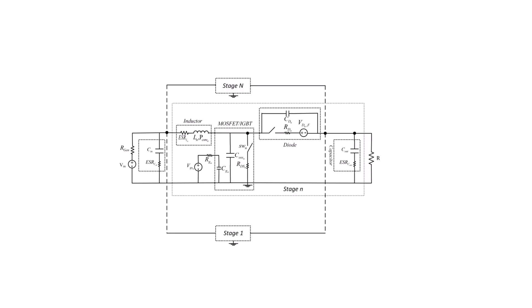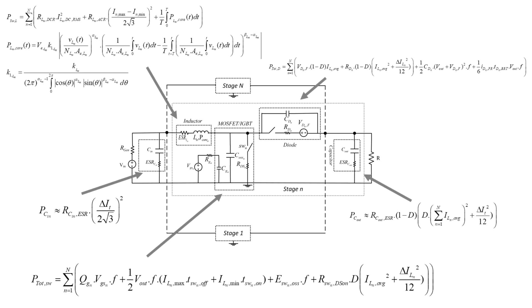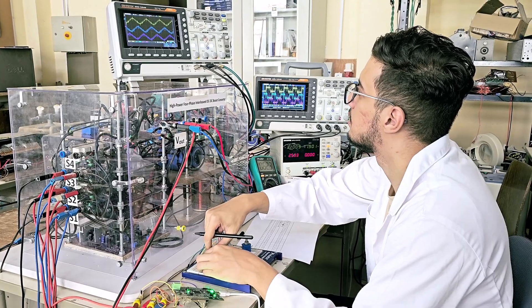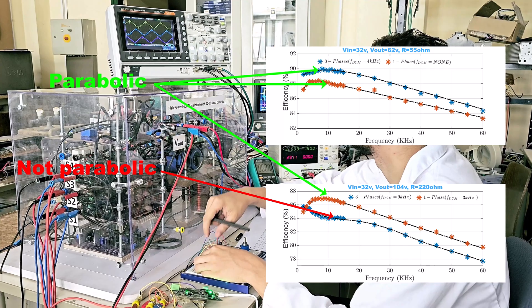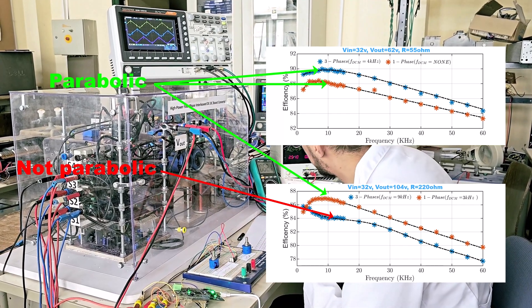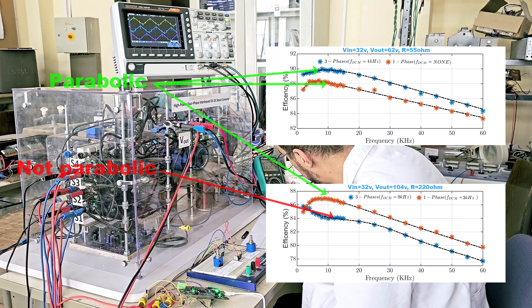Our work develops a detailed power loss model to analyze the frequency behavior of various lossy components. Based on our experiments, we found that the efficiency-frequency curve isn't always parabolic when considering both CCM and DCM, contrary to many simulation studies.